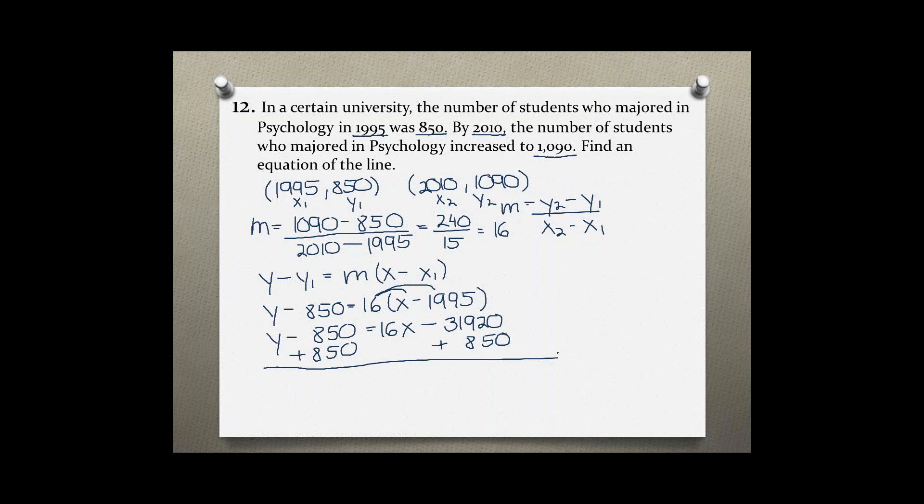And we have y equals 16x minus 31,070. This is the equation of our line.